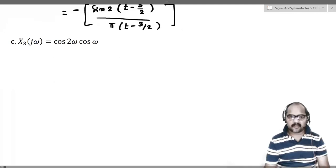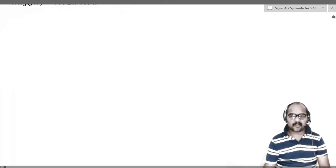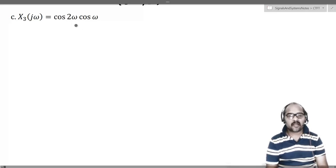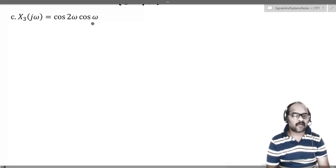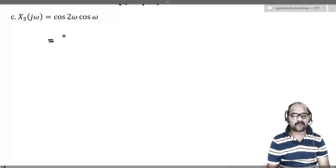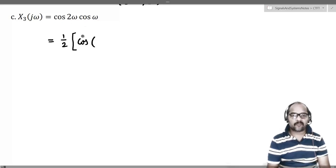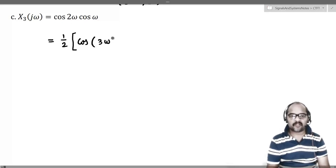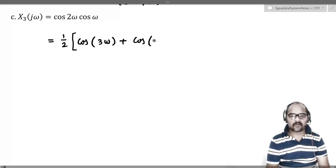Next, as a third example, let us take x3(jω) = cos(2ω)·cos(ω). Clearly we can write this using the product-to-sum identity cos(A)cos(B) = (1/2)cos(A+B) + (1/2)cos(A−B), giving (1/2)cos(3ω) + (1/2)cos(ω).